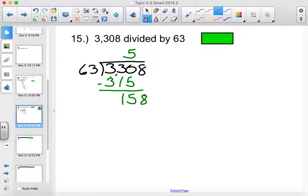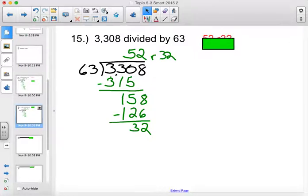63, 158 divided by 63, 63 will go into 158 evenly, 2 times. 2 times 63 is 126. Subtract, and you end up with 2 and 3, so you end up with a remainder of 32. So, our answer is 52, remainder 32. Erase your board.